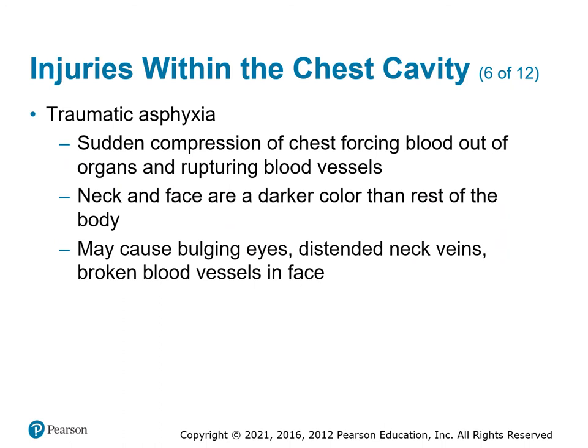Traumatic asphyxia is the sudden compression of the chest — a squishing that pushes blood out of the organs and blood vessels out of the heart and center of the chest. Because the head and face are nearby, you get backed-up venous blood into the neck and head. Everything looks darker, you'll have petechiae, neck veins bulging, eyes bulging, and cyanosis from the nipple line up. It's a very obvious finding you can identify based on mechanism and presentation.